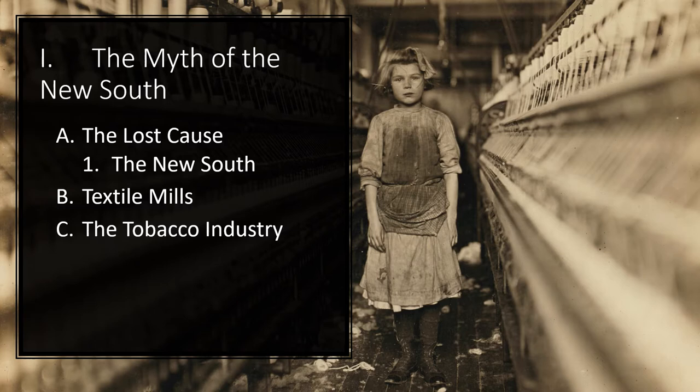The New South: After the Civil War, the South was in shambles with its social, political, and economic systems broken. The region needed a new vision. The New South envisioned by Henry Woodfin Grady and other southerners involved the introduction of industry and diversification of agriculture and manufacturing. Grady, the editor of the Atlanta Constitution, pictured a perfect democracy of farms and industries. However, the New South still assumed that white southerners would remain in control and that black southerners must accept political, social, and economic inferiority.